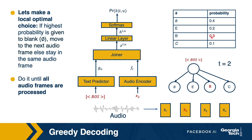Let's say now the highest probability is given to the letter B, and we assume that local optimal choice is a good enough choice. Since we emitted a B, which is not blank, we will continue to stay in time frame 2, but our text history has changed — rather than having beginning of sentence, we now have beginning of sentence and B. Since the text history has changed, the text embedding would change, but we still have the same audio embedding. We pass the text embedding and audio embedding through the joiner, linear layer and softmax, and get a new probability distribution. Now let's assume the highest probability is given to blank.